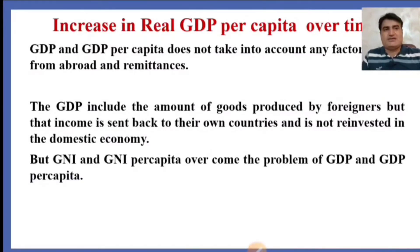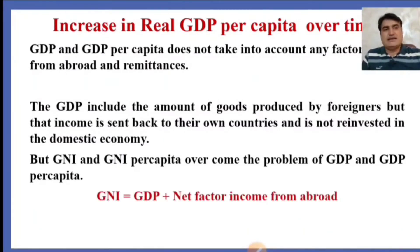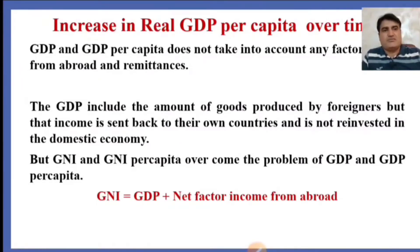GDP includes the amount of goods produced by foreigners, but that income is sent back to their own countries and is not reinvested in the domestic economy. Gross national income and gross national income per capita overcome the problem of GDP and GDP per capita. Gross national income means the money value of all finished goods and services produced by the citizens regardless of the location of production. GNI is equal to GDP plus net factor income from abroad.